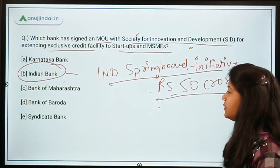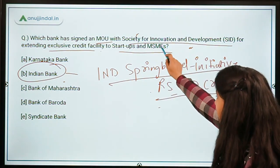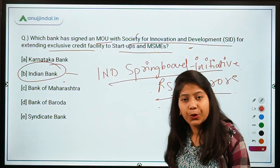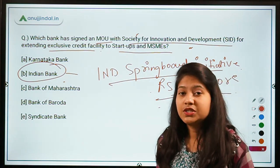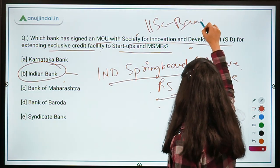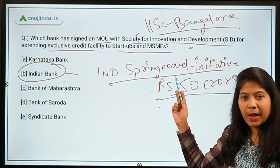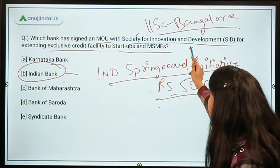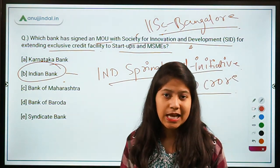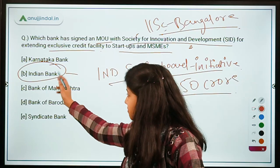The Society for Innovation and Development is an initiative of the Indian Institute of Science, located in Bangalore. It will provide incubation support to MSMEs and startups, while Indian Bank provides the financing under the IND Springboard initiative. My question from you: who is the MD and CEO of Indian Bank?